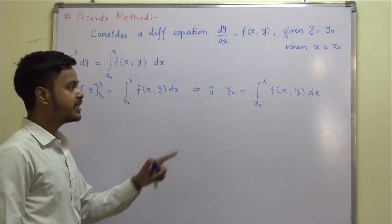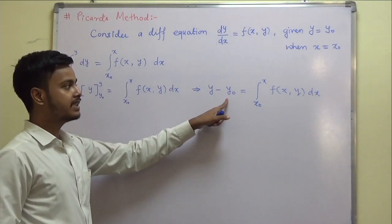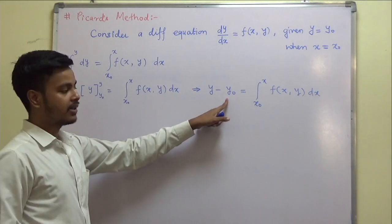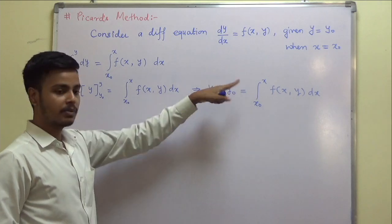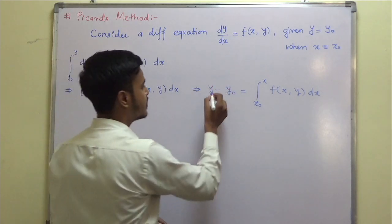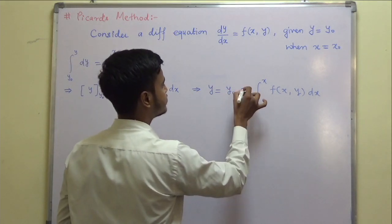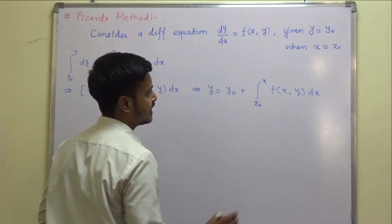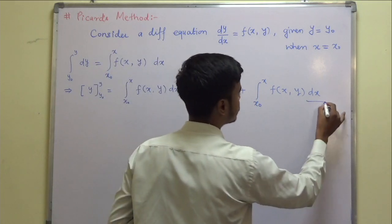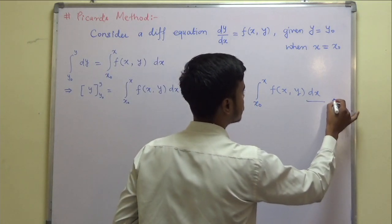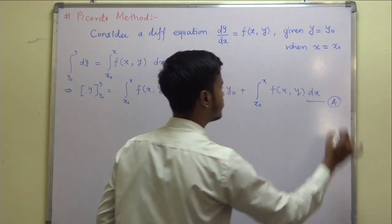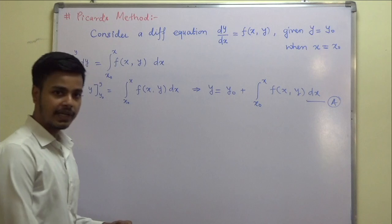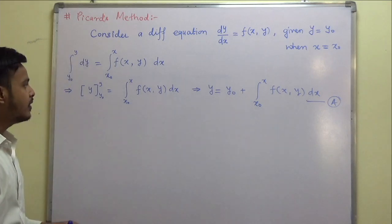Taking the y₀ term to the right side — minus becomes plus — we get the formula: y = y₀ + ∫[x₀ to x] f(x, y) dx. Let us call this equation A.